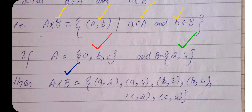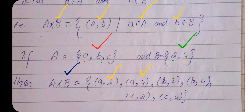Consider the example where A = {a, b, c} and B = {2, 4}. To find A × B, we pick each element of A and pair it with every element of B. Taking element a: we get ordered pairs (a, 2) and (a, 4). Taking element b: we get (b, 2) and (b, 4). Taking element c: we get (c, 2) and (c, 4).